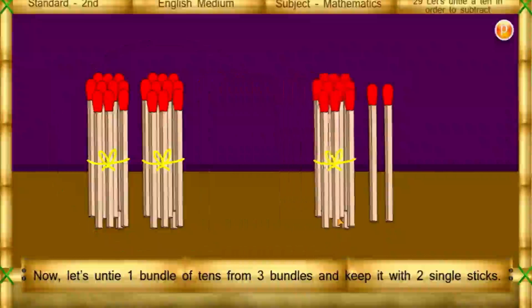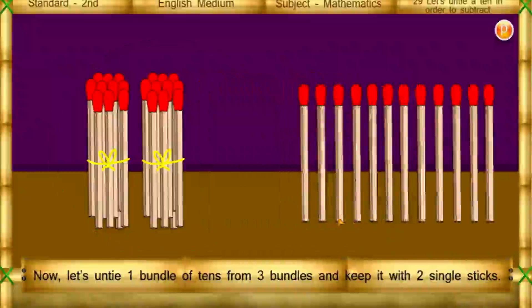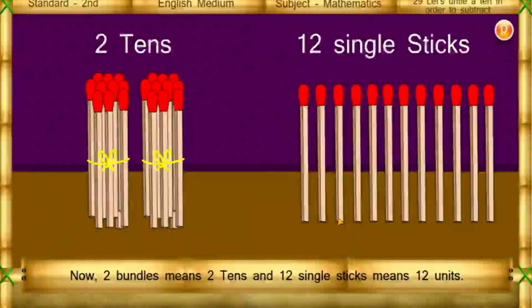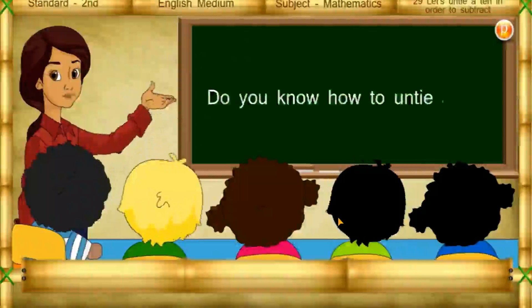Keep it with the two single sticks. Now two bundles means two tens, and 12 single sticks means 12 units. Do you know how to untie a 10?